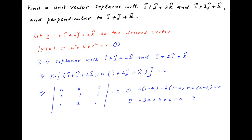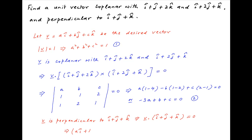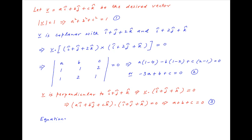Let's call this condition 2. Finally, we are given that vector v is perpendicular to the vector i plus j plus k. Therefore the dot product of v with this vector is equal to 0. This implies that (ai plus bj plus ck) dot (i plus j plus k) is equal to 0, which implies that a plus b plus c is equal to 0. Let's call this result 3.